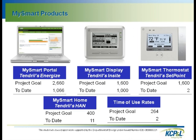One of our biggest challenges with this product is that we have about 10,000 customers in that area, but only about 8,000 are residential. Of that 8,000, we're only projecting about 50% to have internet access. So it becomes a challenge to reach our project goals — doing the math, you end up thinking almost half the customers we need to engage won't use the energy management portal. For those without internet, the other option is the My Smart Display.